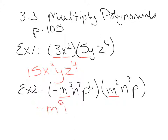The same thing with n — add the exponents. We have a 7 and a 3, so that's going to make n to the 10. Same thing with p. We have a 6, and don't forget, this is a 1 here — the invisible 1. It's not a 0, it's a 1. So 6 plus 1 is 7. So the answer is negative m5n10p7.